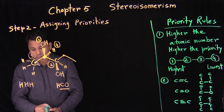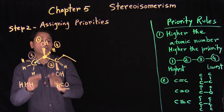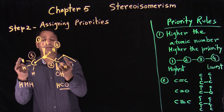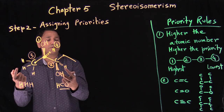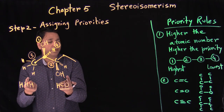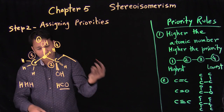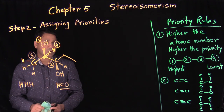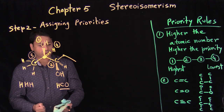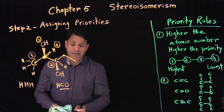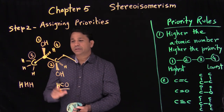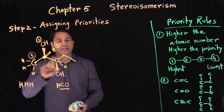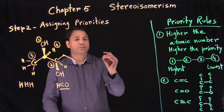So this gets number two priority and the other group gets number three priority. Most of the time, if you go with the second point of contact it's pretty obvious. If not, then you try the third point of contact.